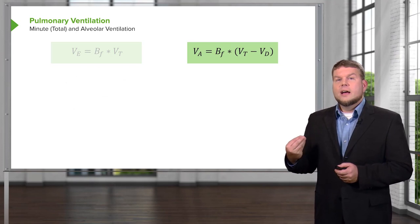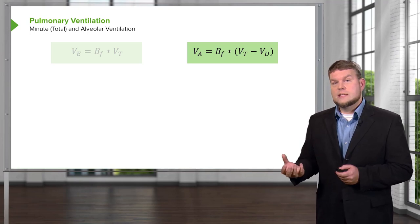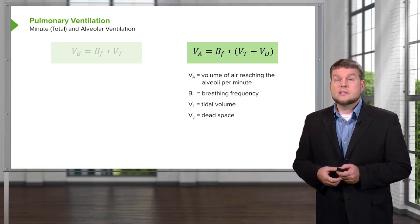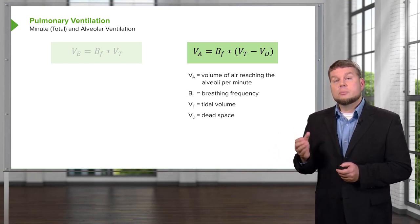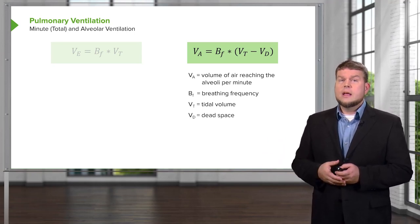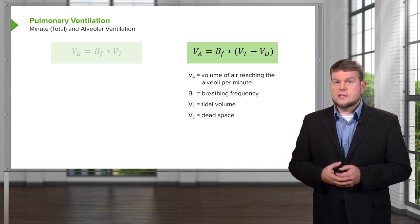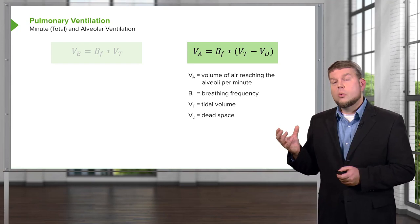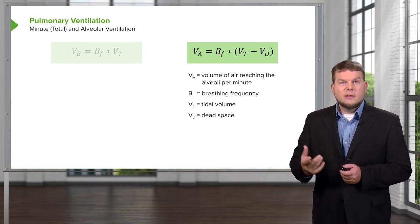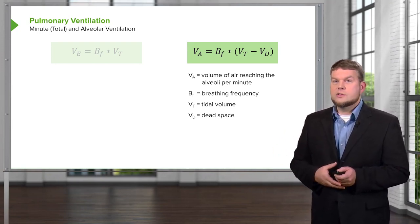If we want to account for alveolar ventilation, we need to account for dead space. Here we have the volume of air that reaches the alveoli — it's the breathing frequency times the tidal volume minus the dead space. Alveolar ventilation accounts for dead space while minute ventilation does not. Alveolar ventilation is more important in pulmonary medicine, but minute ventilation is easier to measure because dead space is a little bit hard to measure.